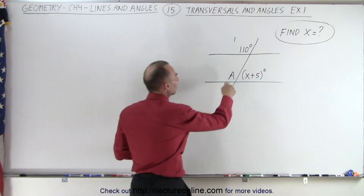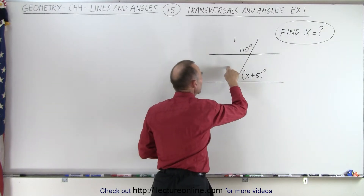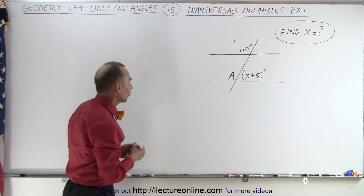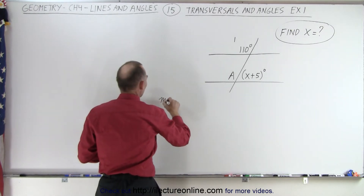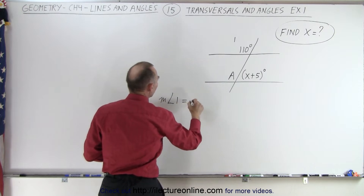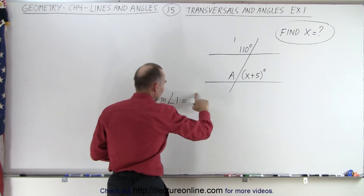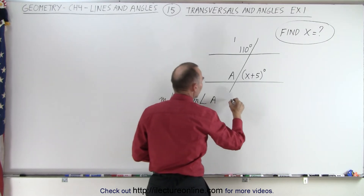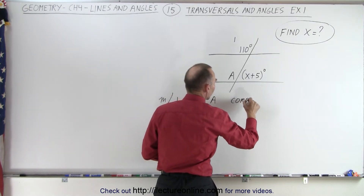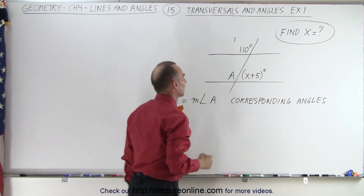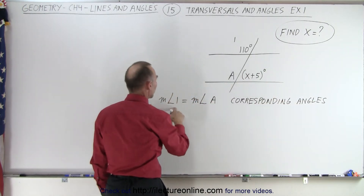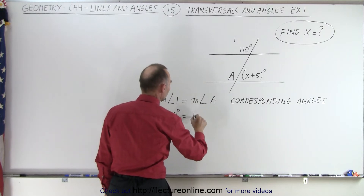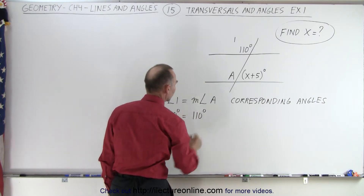First of all, I'm going to relate angle 1 and angle A. Since these are what we call corresponding angles, we know that their measures are the same. So we know that the measure of angle 1 must equal the measure of angle A, and we know that because these are corresponding angles. Therefore, we can conclude that the measure of angle 1 is 110 degrees, and this is therefore equal to the measure of angle A, which is therefore also 110 degrees.